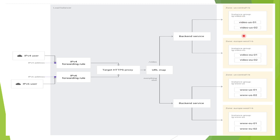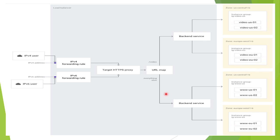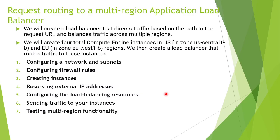We can also check multi-region functionality — we will take down one instance group and check whether traffic shifts to the other region. Due to some quota limits, I have created only one VM for each instance group instead of two.